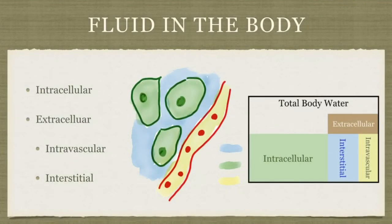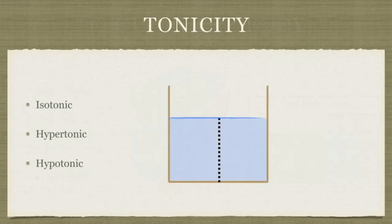Most of the fluid that we have is in the intracellular space of our body, so about 60% of our fluid is inside of our cells. The other 40% is extracellular, with the majority of that being in the intravascular space, and then some of it also in the interstitial space. The intravascular space is the stuff that's in our blood vessels. The interstitial space is the third space between the cells.